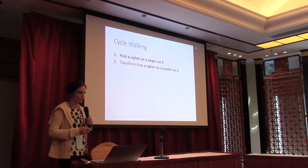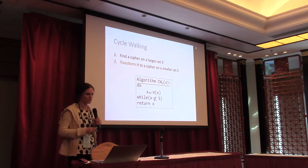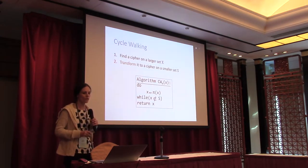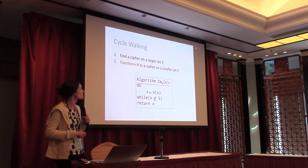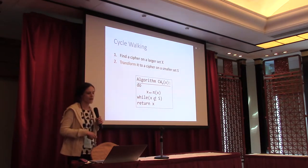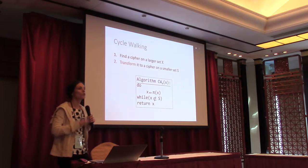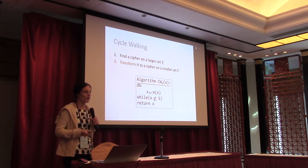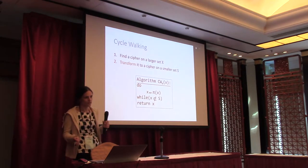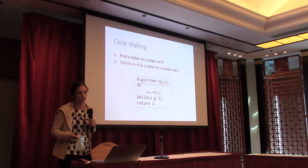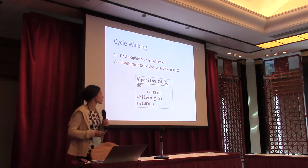One way to do this is called cycle walking, which has been around in the literature for a while. We start with a permutation on the larger set X, and to encrypt a point on the smaller target set, we just evaluate the permutation on this point. If we get something that's in our target set S, then great, we're done. Otherwise, we just repeat — eventually, we'll either get back to the point itself, or we'll find something that's in our target set.